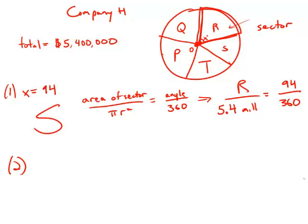Now forget about statement number one. Statement number two tells us that the total expenses for S and T are twice as much as the expenses for R. So S plus T equals twice as much as R, two R.